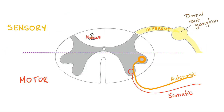Spinal cord. The dorsal root ganglia — follow the rule: it's behind the line, therefore it's sensory. It carries sensation such as heat from your fingertips into the central nervous system. The somatic nerve fiber starts at the anterior horn cell — in front of the line, so it's motor. An autonomic fiber starts from the lateral horn cell — and here is a very important rule: the autonomic nervous system is always motor, never sensory. No exceptions.